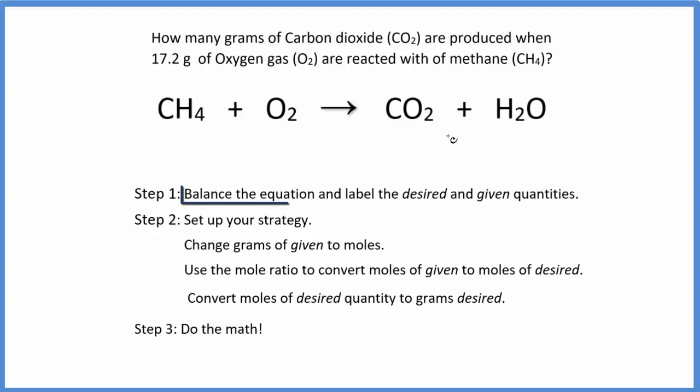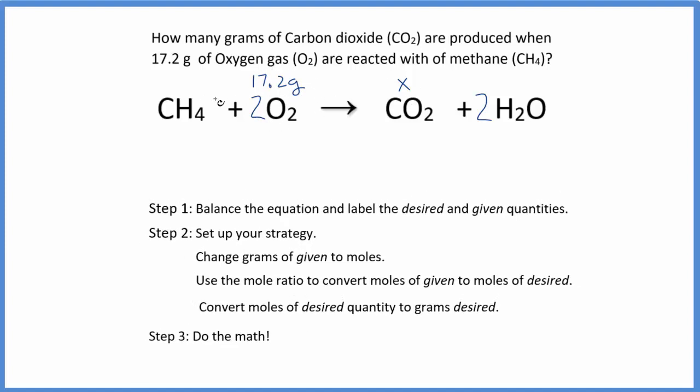First thing we need to do is balance the equation. The next thing is we want to write what we have, what we're given, and what we want to find, the desired quantity. So we're trying to find how many grams of carbon dioxide, call it X, and then we're given grams of oxygen gas. So we have 17.2 grams of oxygen gas. So we know what we're looking for, we know the information we have, and we have a balanced equation.